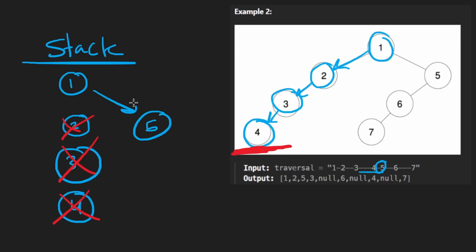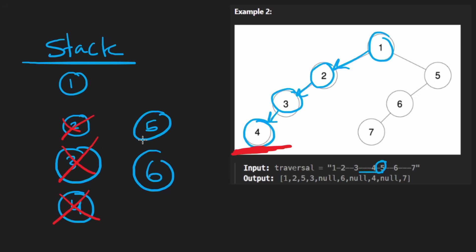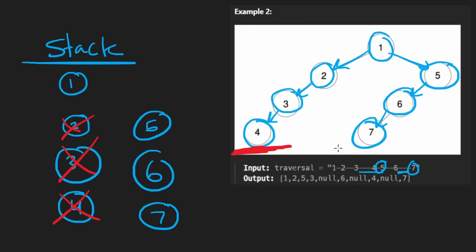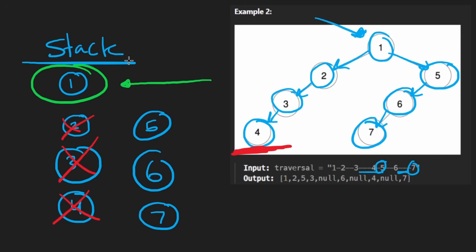Then two dashes and six — stack length is not greater than the dashes, so we push six as the left child of five. Then three dashes and seven — no popping needed, push seven as the left child of six. We're done building the tree. To return the root, notice we never pop the root from the stack, so we can always just return the first node added — index zero of the stack array.